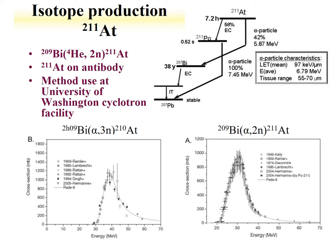The isotope production information is shown here as cross-sections as a function of energy. The cross-section for the bismuth-209 alpha-2N reaction goes up to about a barn, peaking at around 30 MeV, while the 3N reaction peaks at a higher energy of 40 MeV with a cross-section slightly over a barn. One would surmise that to preferentially produce astatine-211, the preferred energy would be around 30 MeV, where the 2N reaction peaks and the 3N cross-section is very low.